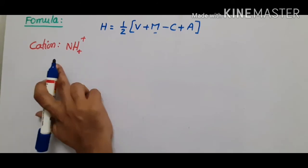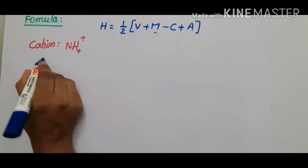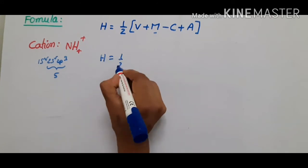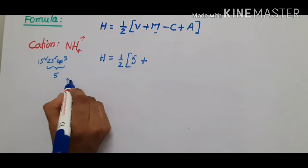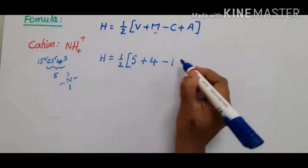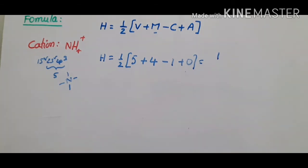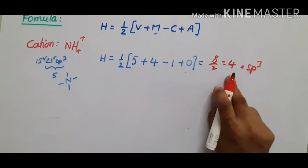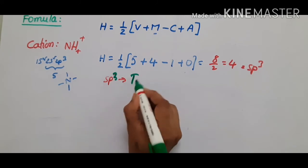Now, if the given covalent molecule is a cation, you can still use the same formula. For NH₄⁺, the central atom is nitrogen with configuration 1s² 2s² 2p³, giving 5 valence electrons. H = ½(5 + 4 - 1 + 0) = 8/2 = 4. There are four monovalent H atoms and the cation charge is +1. H = 4 gives sp3 hybridization and tetrahedral geometry.